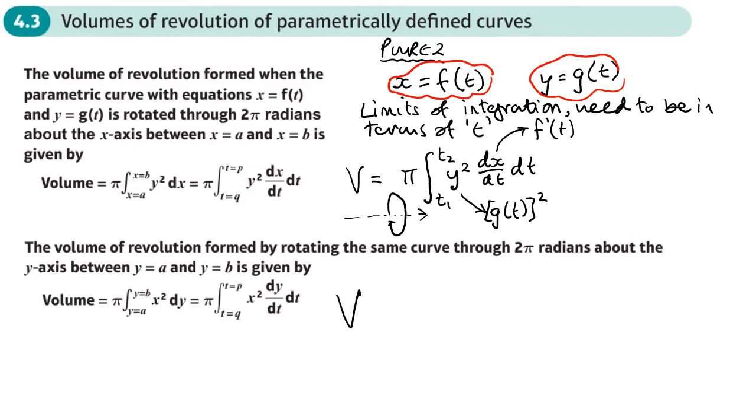If it's a volume of revolution around the y-axis, there's our y-axis like that, so it's going to be rotated 2π around that way. Then again, our limits are going to be in terms of t. This time, it's going to be our function of x that gets squared. So that would be f of t all squared. Then dy dt, that's our y function differentiated dt.